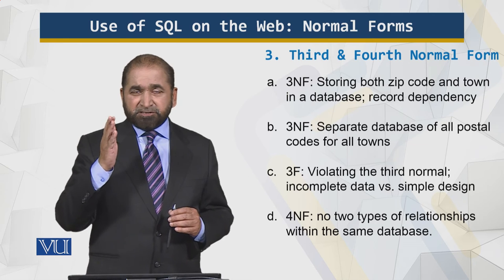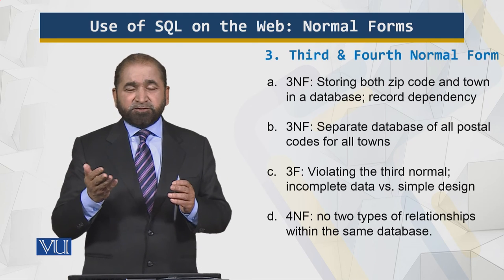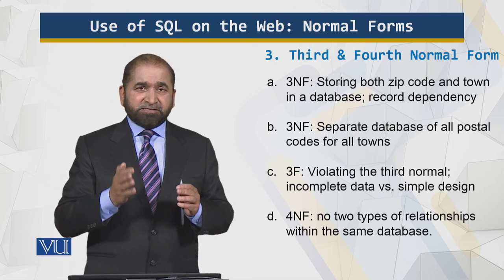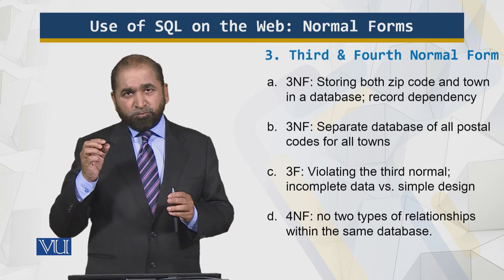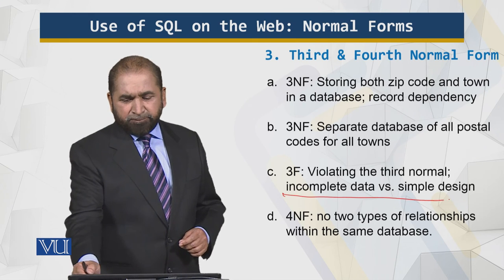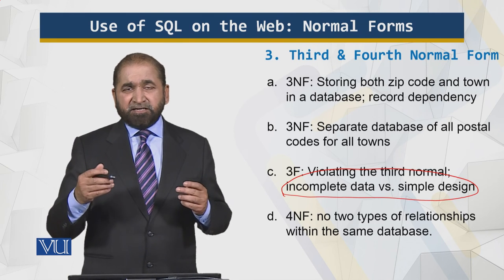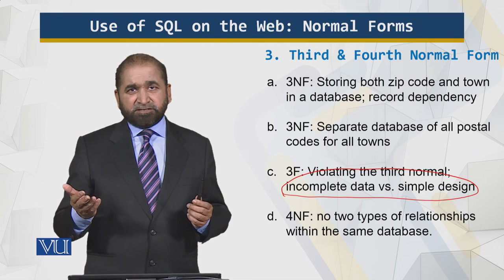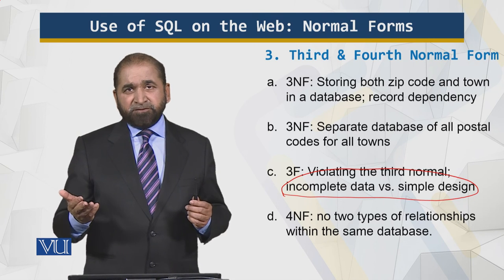Third Normal Form: if a table contains both zip code and town name, there is a dependency between them. A customer may provide only the zip code or only the town name, making the record incomplete. We remove that dependency by placing the zip code in a separate table with its corresponding town name. For zip codes, the number of towns is relatively small, so a simple design works. However, for larger scenarios — such as a million-customer insurance database with appointments — this separation becomes essential.